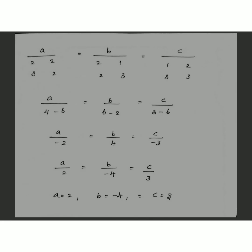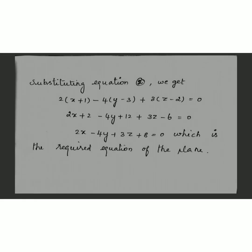Substitute a, b, c into equation 2: 2(x + 1) − 4(y − 3) + 3(z − 2) = 0. When you simplify, you get 2x − 4y + 3z + 8 = 0, which is the required equation of the plane. This completes Type 2, where one point and two planes are given. I hope you are all clear about these two types. Thank you.